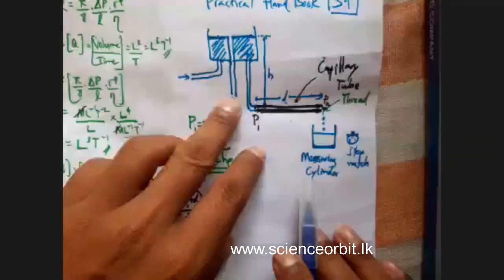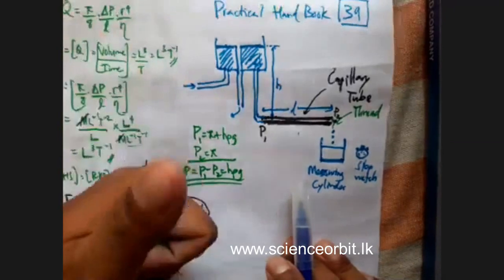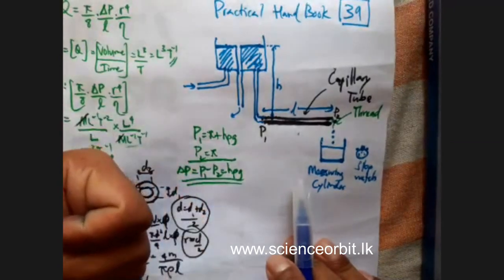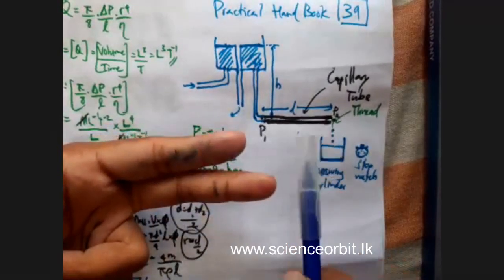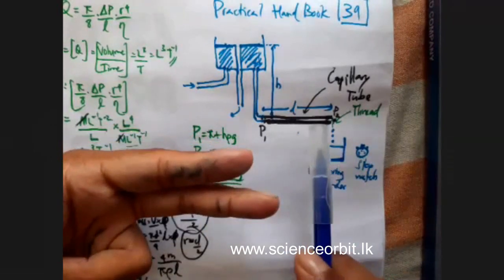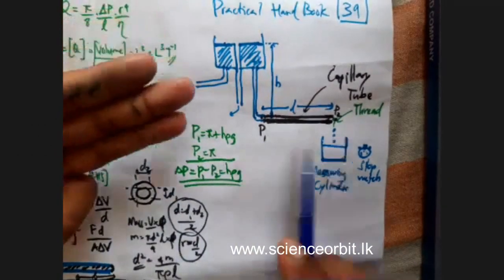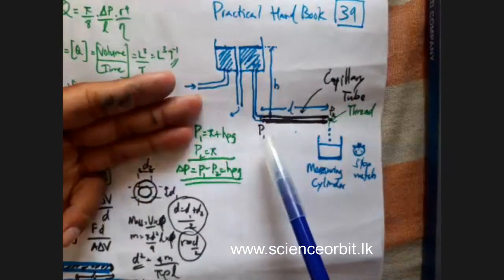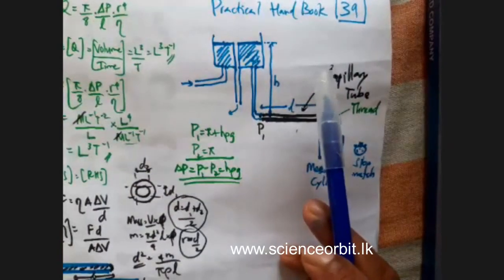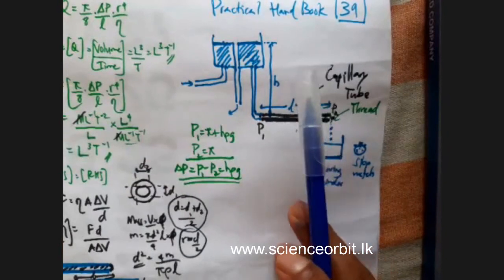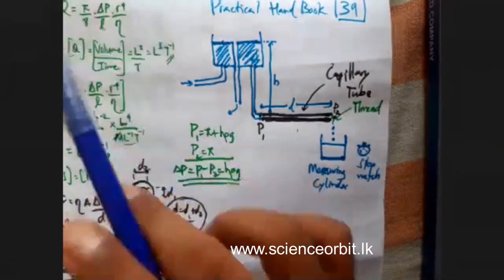Now for the theory part of this experiment: for Poiseuille's equation to be valid, we studied five conditions. One is laminar flow. Second, the tube should be horizontal. Third, the tube should have a circular cross section. Fourth, a viscous liquid should flow. And fifth, it has to be a capillary tube. When all conditions are satisfied, we can use this equation.